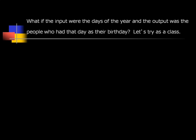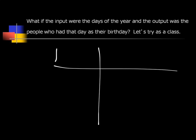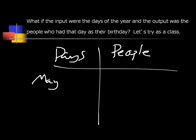Now, what if we switched it and said the input was every day of the year — January 1st, January 2nd, January 3rd, January 4th — and the output was all the people who had that same day as their birthday?